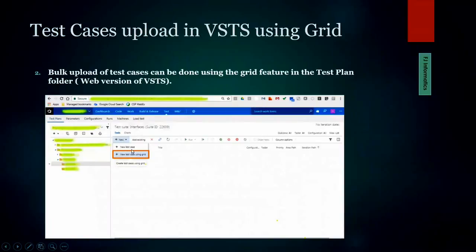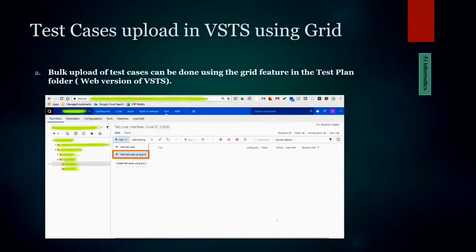You'll get two options: 'New Test Case' and 'New Test Case Using Grid.' If you want to write test cases one by one, use the first option — fill in all the fields and click Save. However, since we're doing a mass upload, we select 'New Test Case Using Grid' for bulk upload. This feature is available in the web version of VSTS.